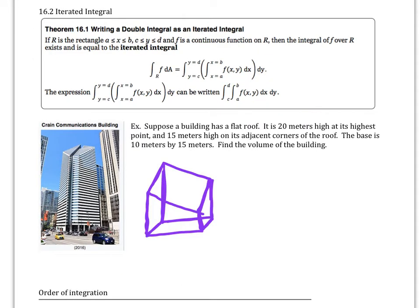Suppose we have a building that has a flat roof — 20 meters at its highest point and 15 meters high at its two adjacent corners of the roof. The base is 10 meters by 15 meters. Find the volume of the building. In the picture, the back edge is 20 meters high, and the two adjacent sides are each 15 meters high.